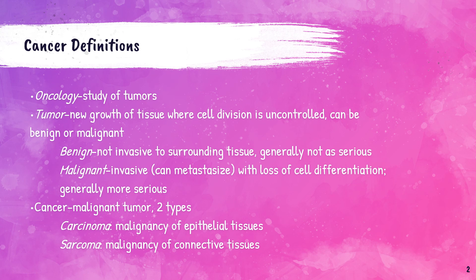A lot of this lecture is just going to be memorizing terms. The first term is oncology, which is a branch of medicine that deals with the prevention, diagnosis, and treatment of cancer or tumors. A tumor is a new growth of tissue due to the uncontrolled proliferation of cells. Tumors can be defined as either benign or malignant. Benign tumors are not invasive to the surrounding tissues and are generally not as serious as those that are malignant.